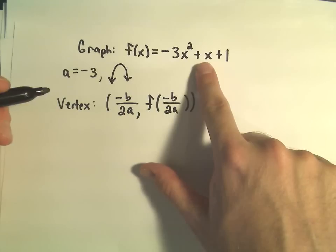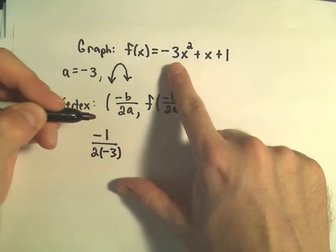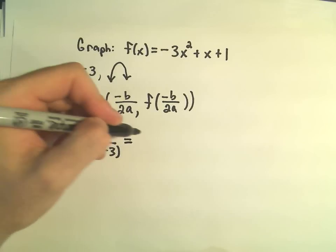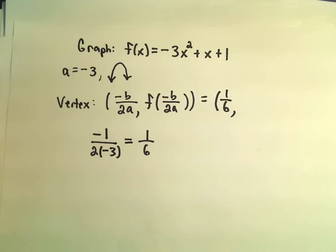So remember, b is the coefficient on the x. So we'll get negative 1 over 2 times negative 3. So that's just going to be positive 1 over 6. So that's going to be the x-coordinate of our vertex.